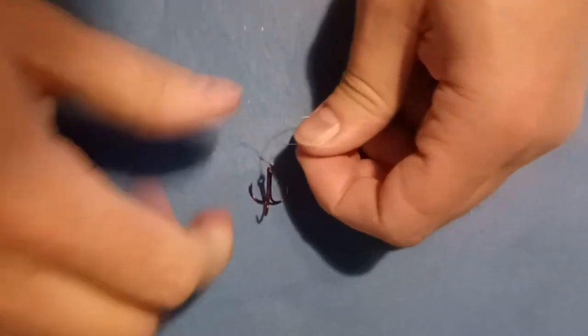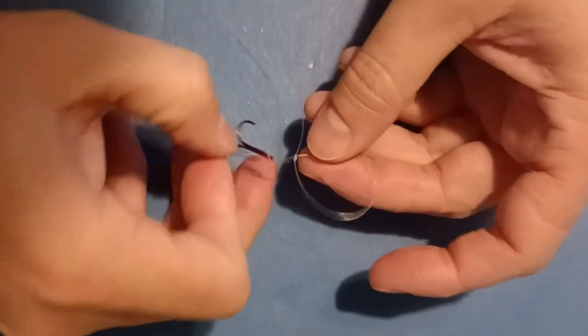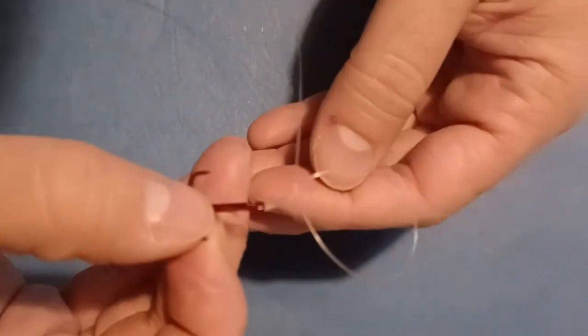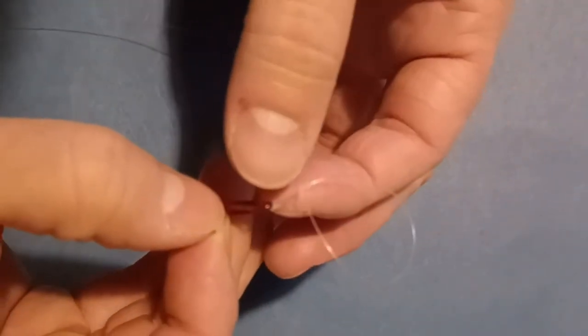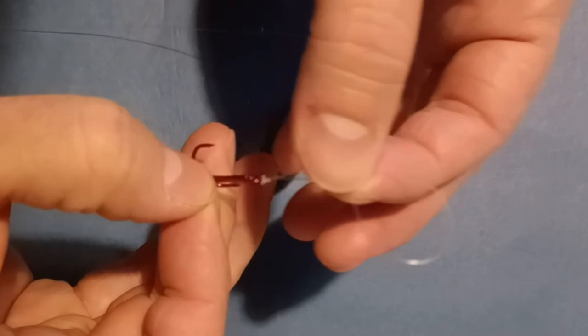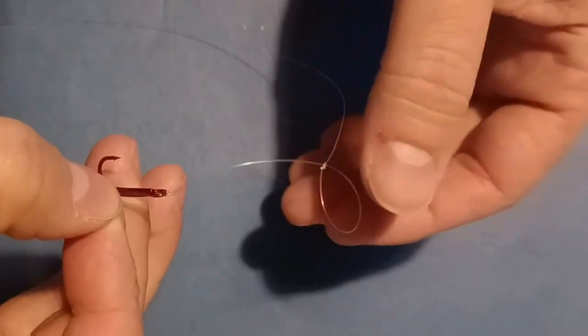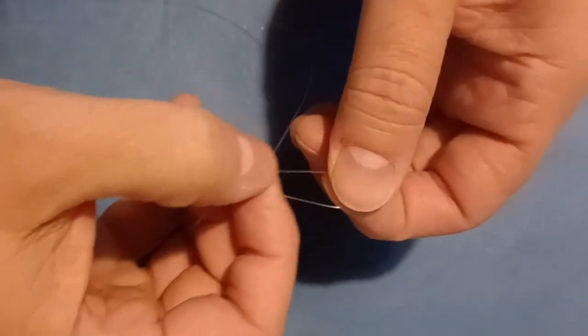And now, so what you can see is you have a large loop with a slipknot. And it's that large loop that you're going to put on the jig hook, and you're going to cinch that down. However, at this point in time, that slipknot will actually unravel under any type of tension.